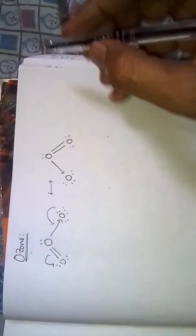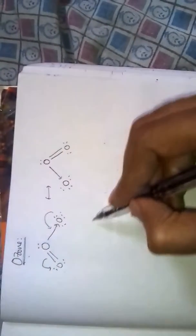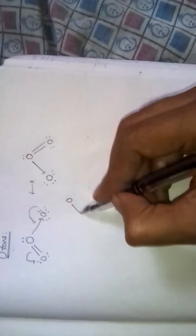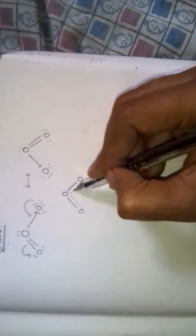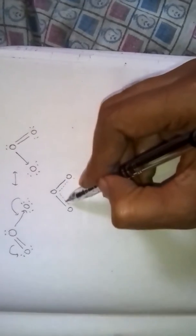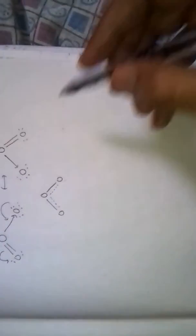This one is the resonance structure of ozone. By combining these two, you can write the resonance hybrid. Because of resonance, both the bonds get partial double bond character.